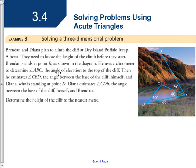Brendan stands at point B as shown in the diagram. He uses a clinometer to determine angle ABC, the angle of elevation to the top of the cliff, that's 76 degrees.